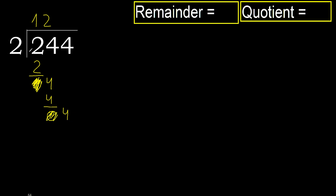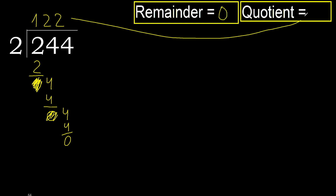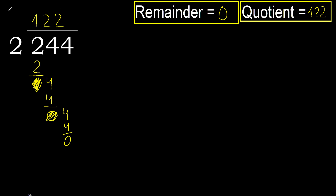Fold. 2 multiplied by 2 is 4. Subtract. Next. There is no number, therefore finish it. Ok, 244 divided by 2 is done.